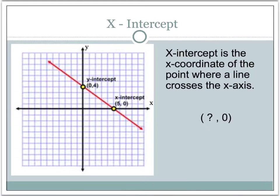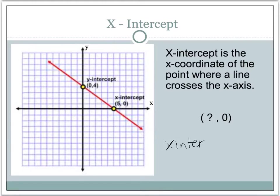So an x-intercept. The definition of an x-intercept is the x-coordinate of the point where a line crosses the x-axis. So we have a line here, this red line, and we want to find the point where it crosses the x-axis. This is our x-axis, and the point where our red line crosses the x-axis is right here at the point 5, 0. That's called your x-intercept. Now the intercept is actually just the x-part of that coordinate, so the x-intercept is going to be 5.